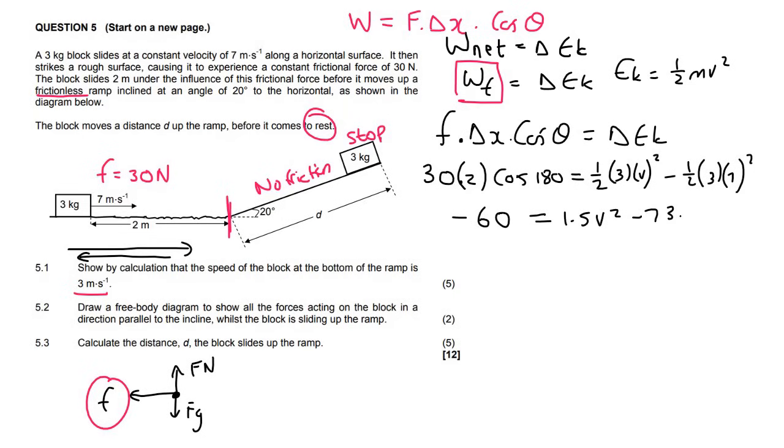We just go ahead and type everything in. So this will be negative 60 equals to 1.5 v squared minus 73.5. You take the 73.5 over, and then you divide that by 1.5. It gives us a very nice value: v squared is equal to 9. And then if you take the square root, v is equal to 3 meters per second. That's what they said, show that it's equal to 3 meters per second. That makes sense.